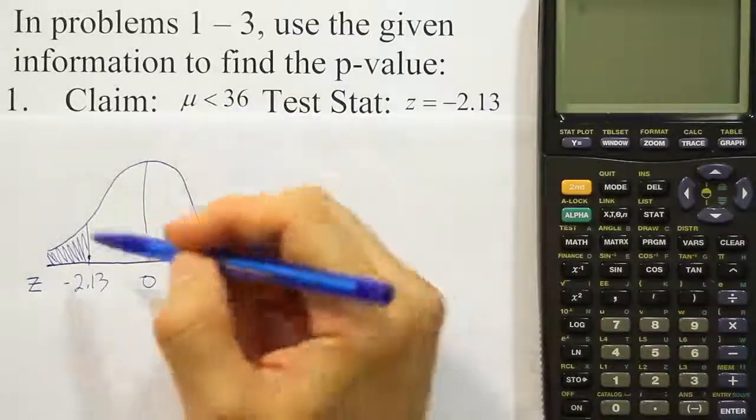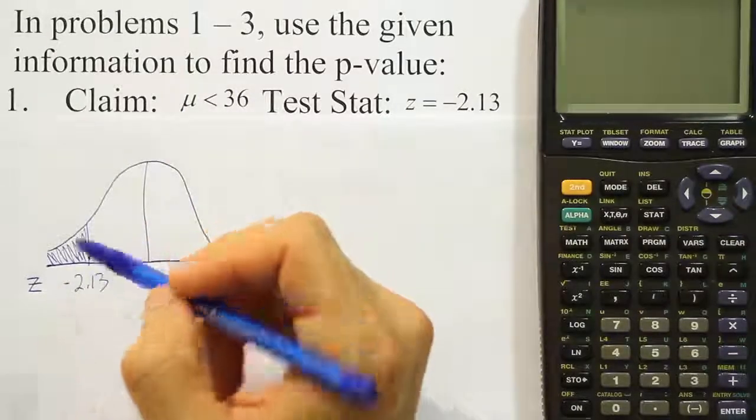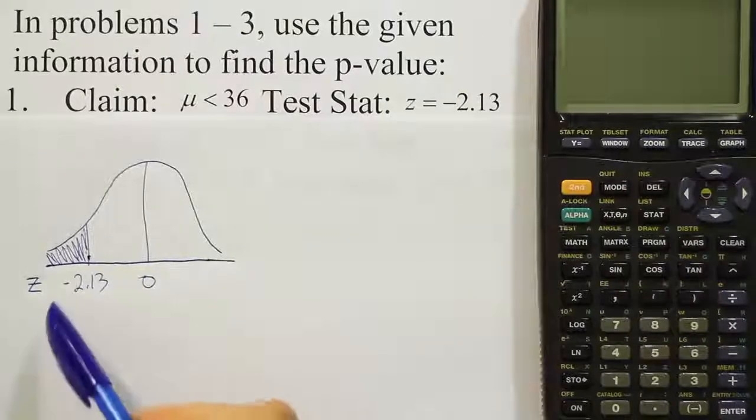it says that because the claim is a less than symbol, our rule for finding the p-value is we find the area to the left of the test stat. Because we have a left-tailed test, we find the area to the left of the test stat.